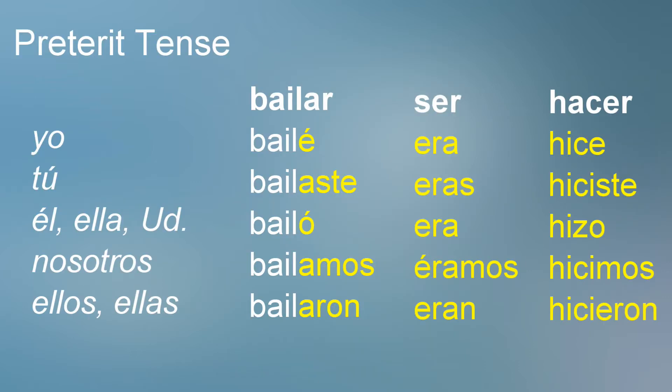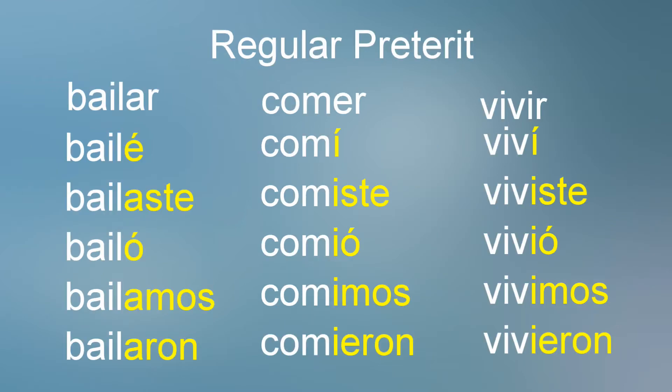The preterite tense has both regular and irregular forms — in fact, it has a lot of irregular forms. For regular verbs, drop the AR, ER, and IR endings as usual and add the new ending depending on the subject. You might note that for regular verbs the ER and IR endings are identical.